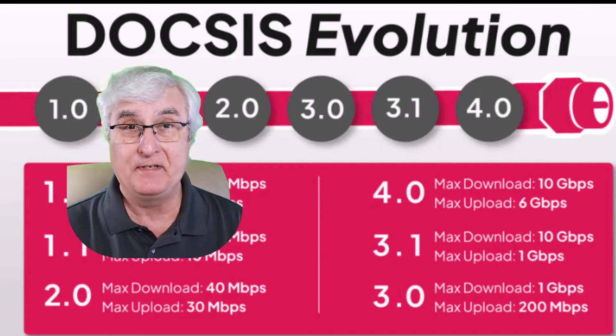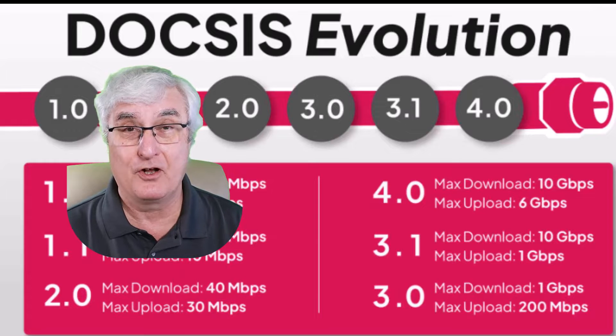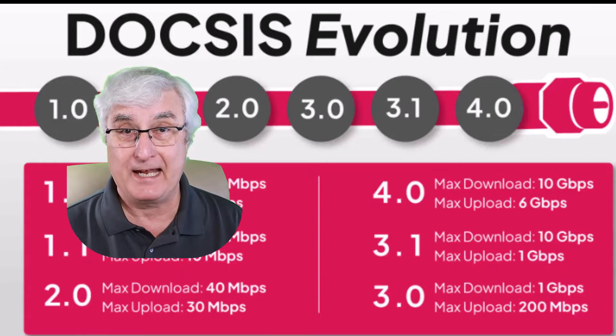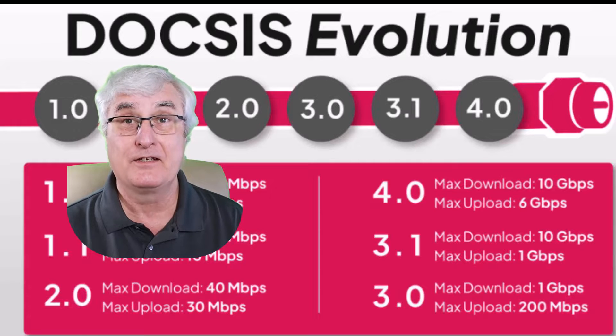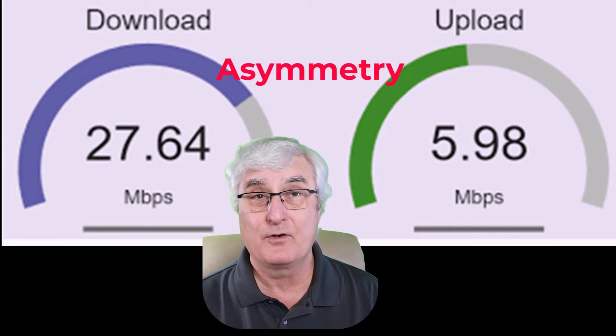The version of DOCSIS in your cable modem is probably DOCSIS 3 or 3.1. You can't update your cable modem as it is a chip in that box. As we are moving now to DOCSIS 4, your cable companies will be upgrading those modems to DOCSIS 4.0, which should give you a bit better speed. When we talk about cable speed, what we're talking about is asymmetry — the download speed is not equal to the upload speed. For example, if you have a 1 gigabit cable connection, the download speed will be 1 gigabit, but the upload speed will be about 100 megabits, depending on how the service is organized.